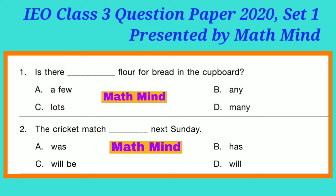Question 2: 'The cricket match dash next Sunday.' Option C is correct: 'will be.' The cricket match is not today or yesterday, so past and present tense will not come — options A and B are cancelled. The cricket match is next Sunday, so it is future tense. Option C is correct: simple future tense.